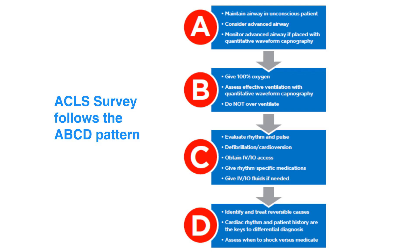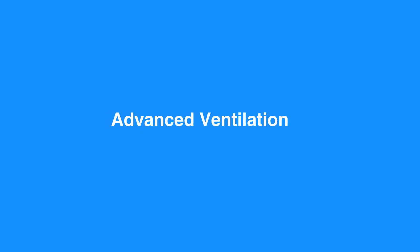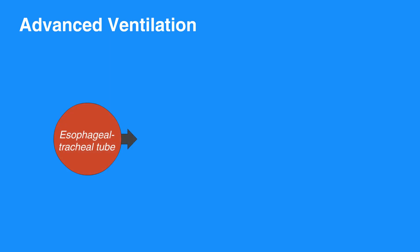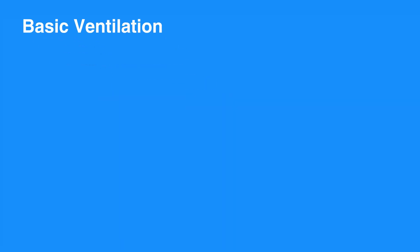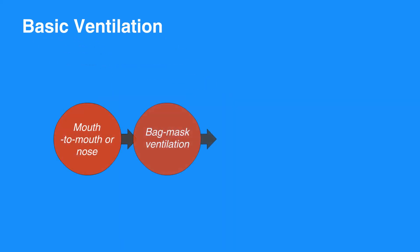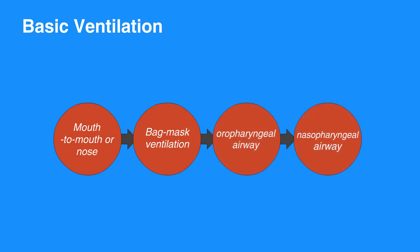When caring for individuals in respiratory arrest, keep in mind the two types of ventilations: advanced and basic. Advanced ventilation includes esophageal tracheal tube, endotracheal tube, laryngeal tube, and laryngeal mask airway. Basic ventilation includes mouth-to-mouth or nose, mouth-to-bag ventilation, oropharyngeal airway, and nasopharyngeal airway.